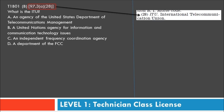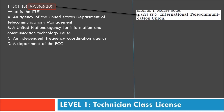Part 97.3 says ITU stands for International Telecommunications Union. That's probably enough to pass the exam, but here's a better description: the International Telecommunication Union is an agency of the United Nations — a division of the UN whose purpose is to coordinate telecommunication operations and services throughout the world.